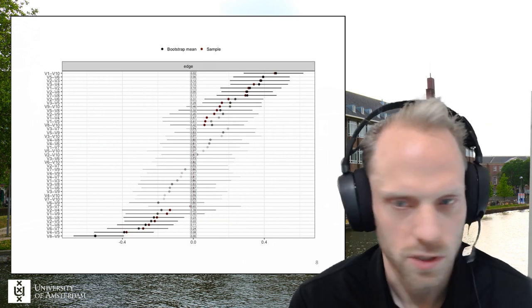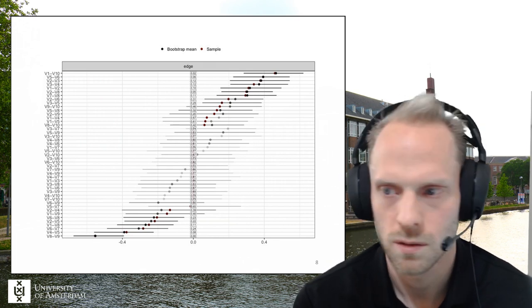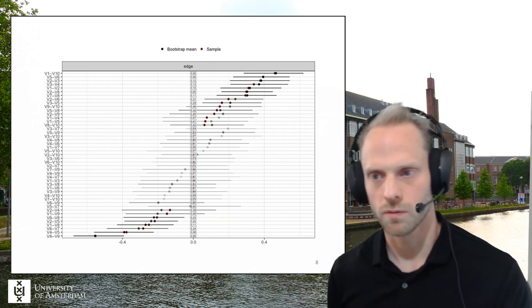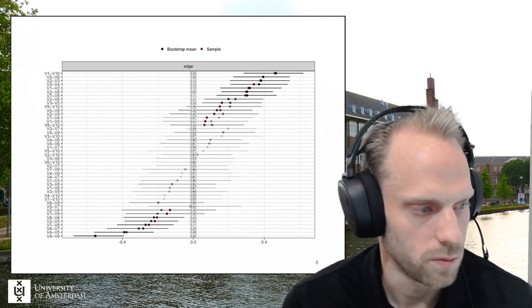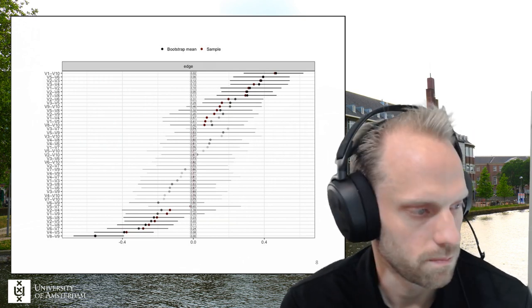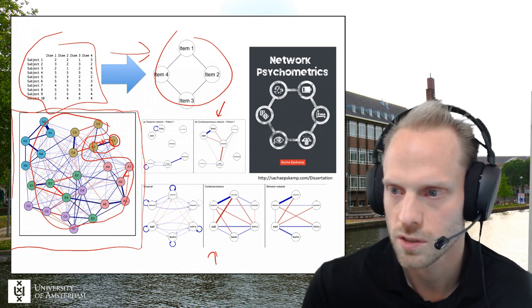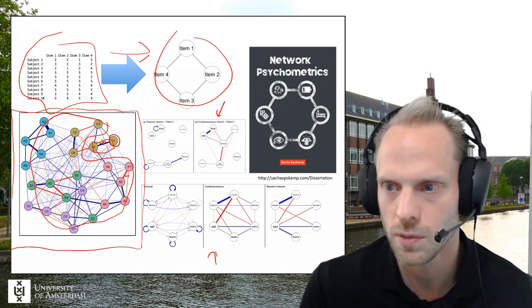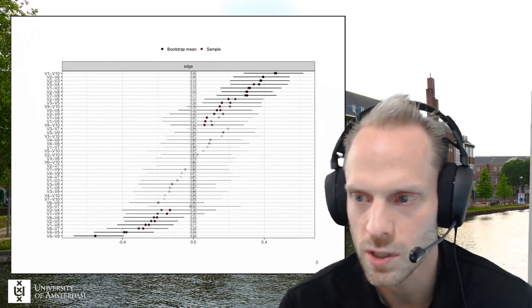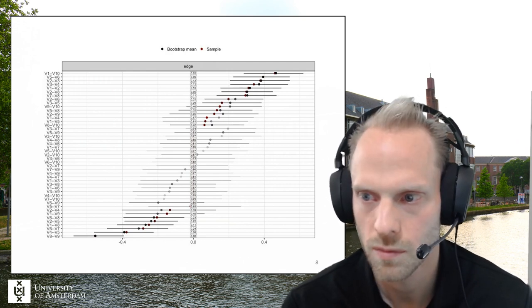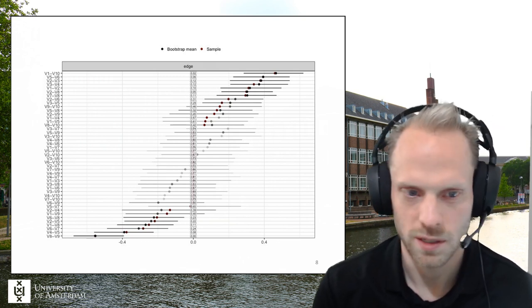In many other fields, people just use some random method to generate a network without concern for uncertainty — brain networks for example show quite a lot of variability in method quality. We look a lot at stability: would you get the same results with a new dataset? Are differences in structure meaningful or substantial between groups? For that we use resampling methods, significance testing, and Bayesian sampling methods. That's really the core of the estimation.